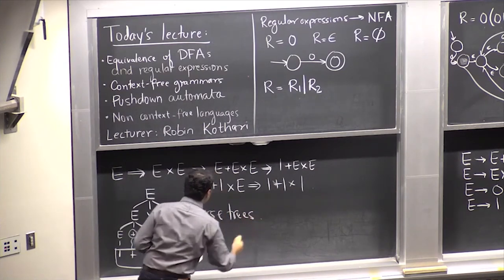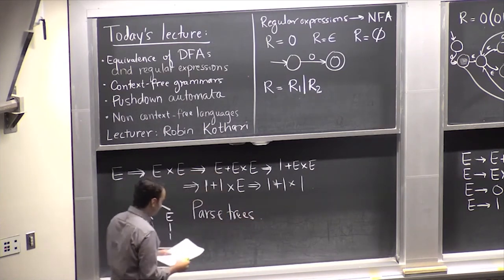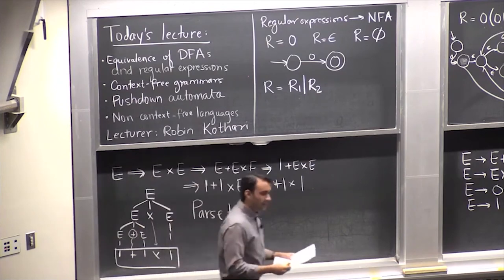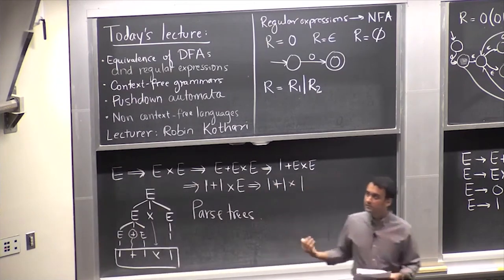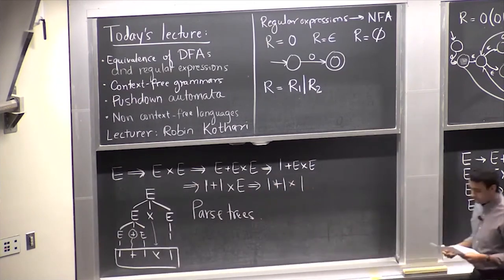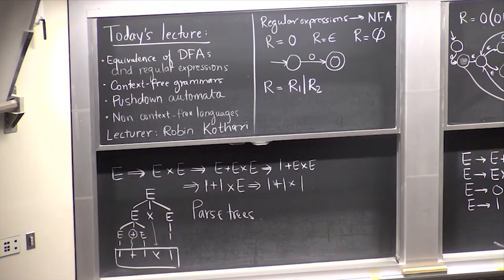There's a nicer way to view these derivations as a tree, called a parse tree. You have E at the top as the start variable. You first used the E times E rule, so draw E times E below. Then this first E expanded using E plus E. Then each of those E's was replaced by one, and the third E was also replaced by one. Reading off the leaves gives one plus one times one. Parse trees are a nice visual representation of how the derivation was done.